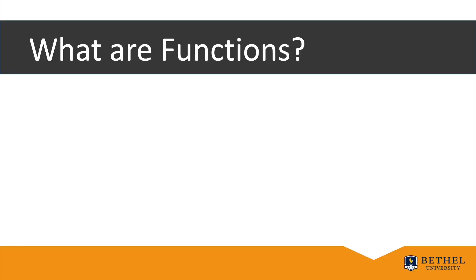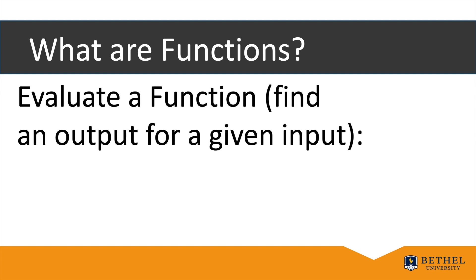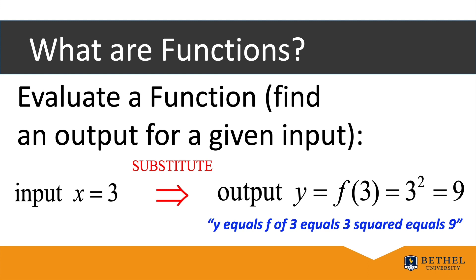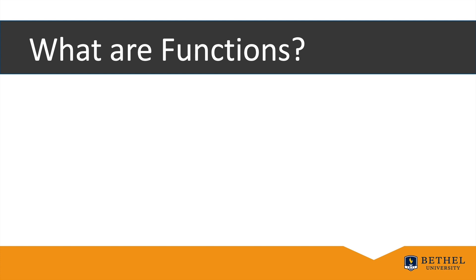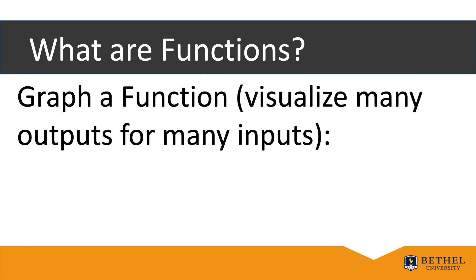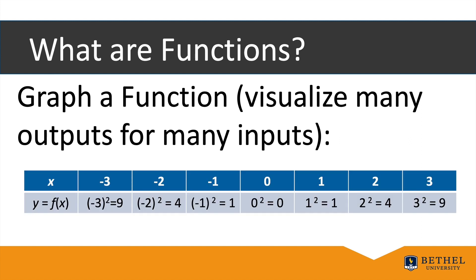Let's look at what we just did — we were evaluating the function, finding an output for a given input. When the input x equals 3, we substitute into the function to get the output y equals f(3) = 3² = 9. To understand functions in their totality, we make graphs. Graphs visualize many outputs for many inputs. To make a graph, start with a table of values: the first row represents values of x (the input) and the second row represents the corresponding values of y (the output).